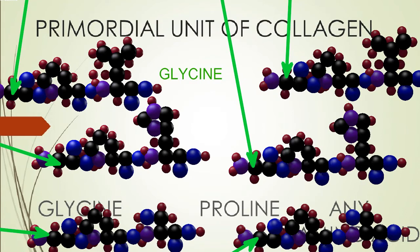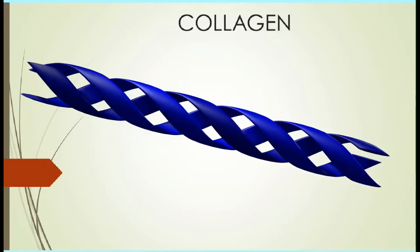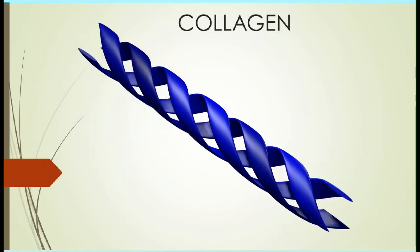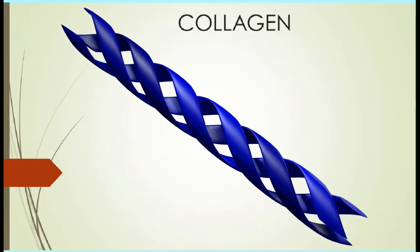which can be any amino acid. It is significant that glycine is the smallest amino acid, and thus it allows three collagen proteins to fit together in a triple helix.